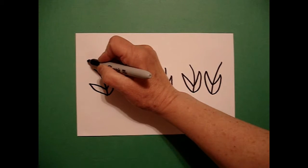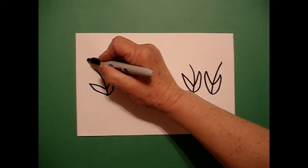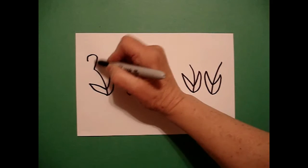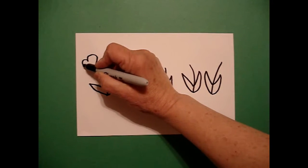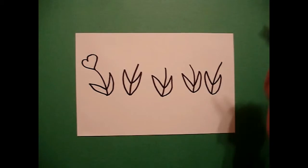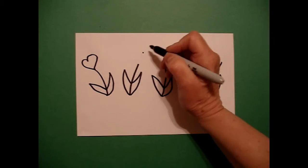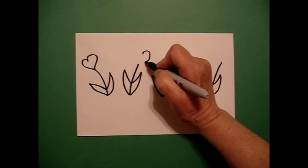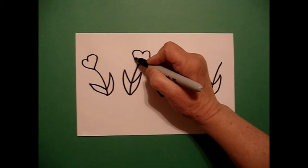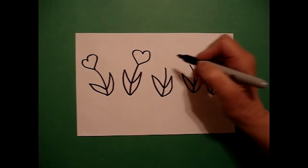Now to make my hearts, I put a little dot and I go curve line out, connect on the right, curve line out, connect on the left. I make a dot, curve line out, in, connect, curve line out, in, connect.